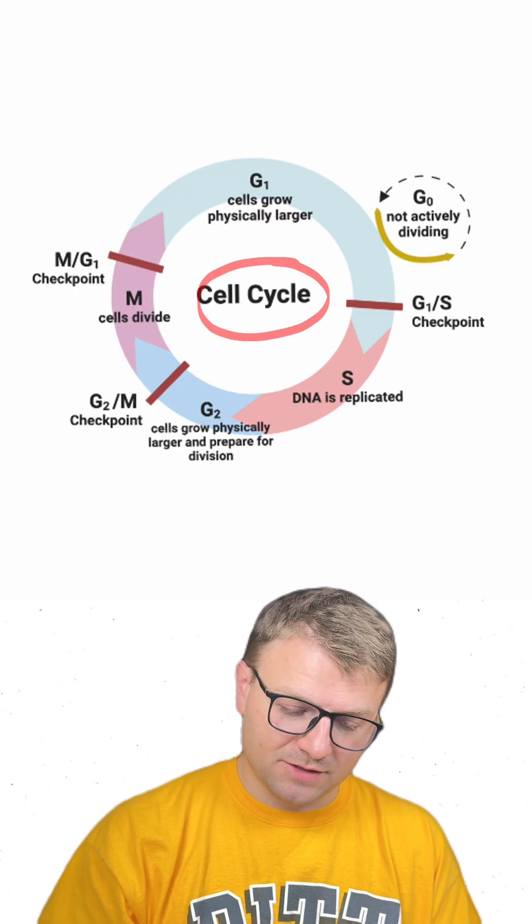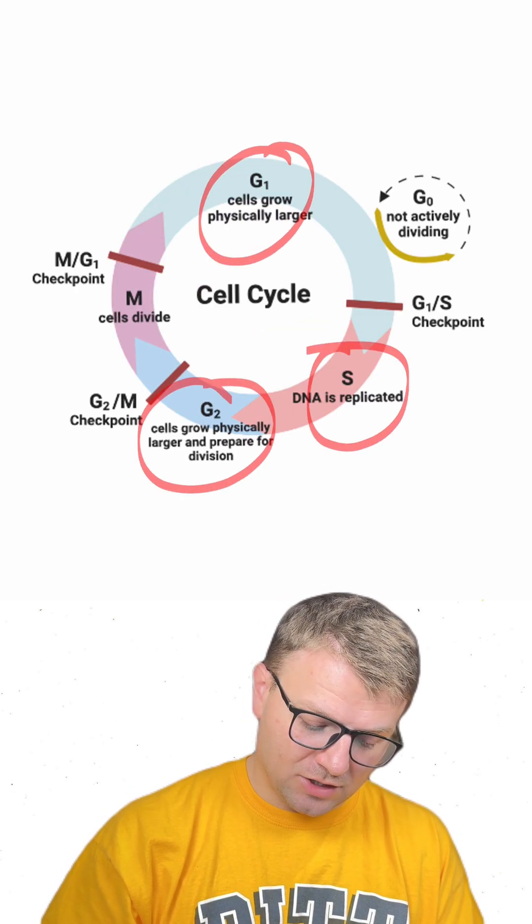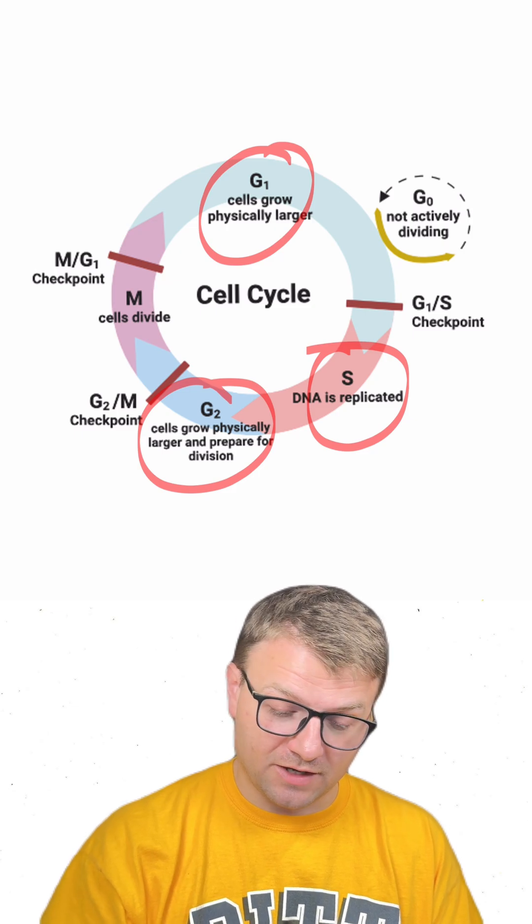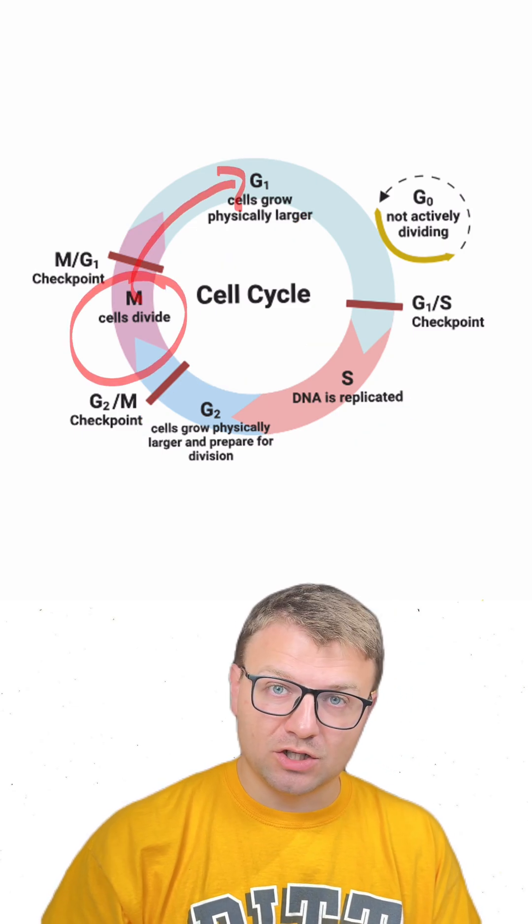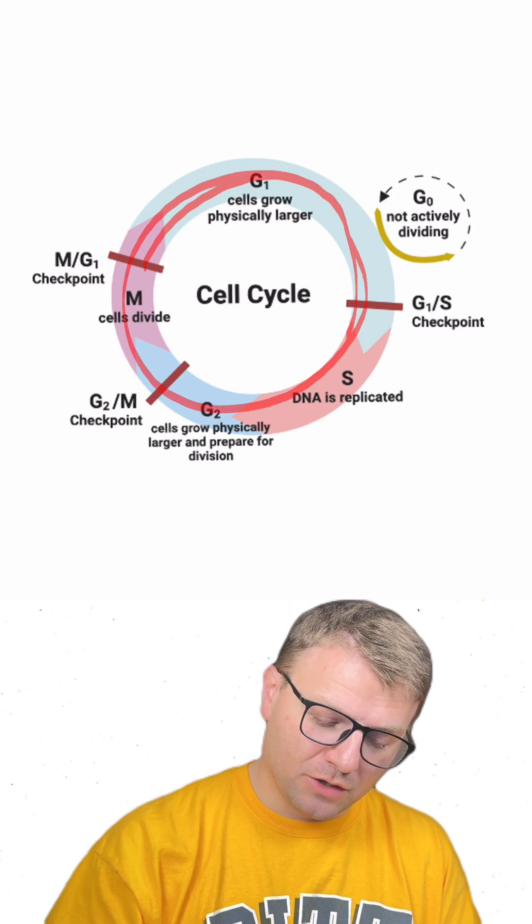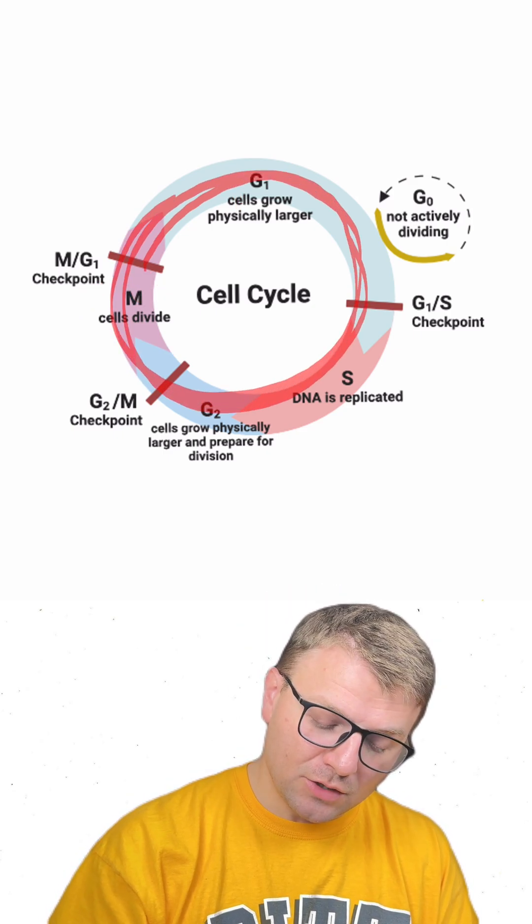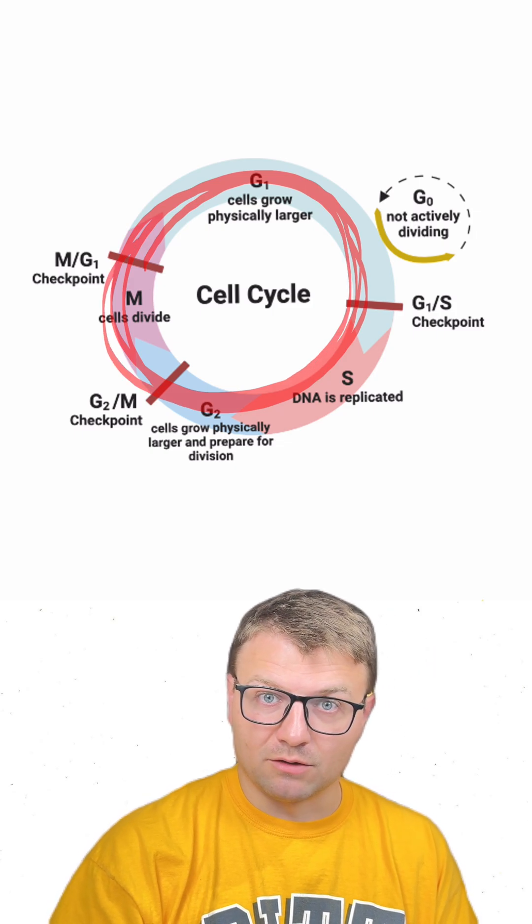Remember we have our cell cycle. Cells go through G1, S, and G2 phases during interphase. They then enter M phase and divide and go back into G1 phase. They will continue this cycling of going through interphase and mitosis until the cell dies.